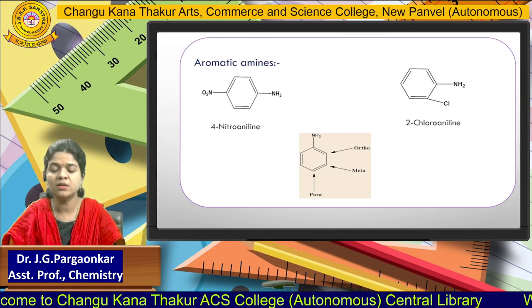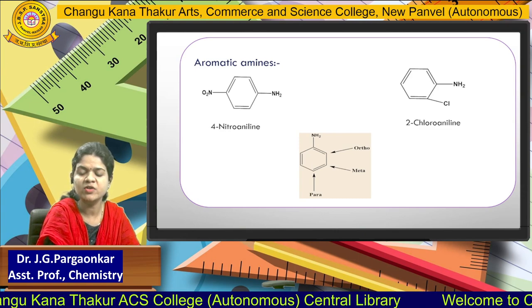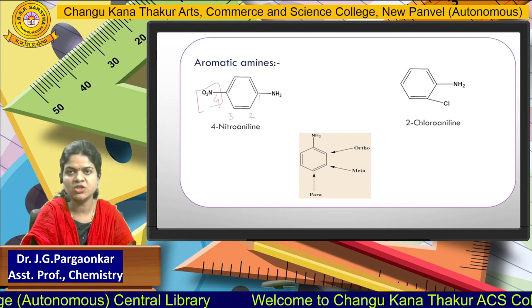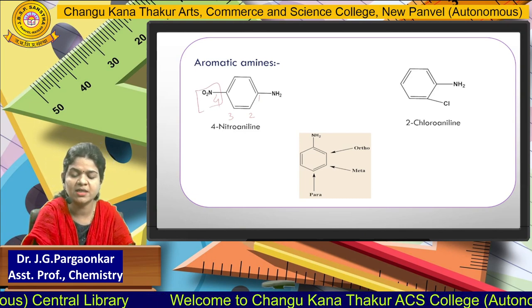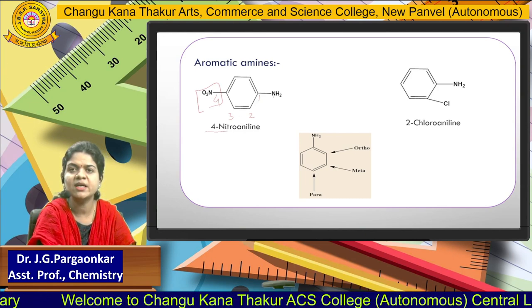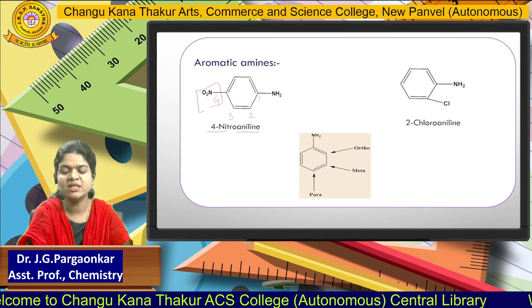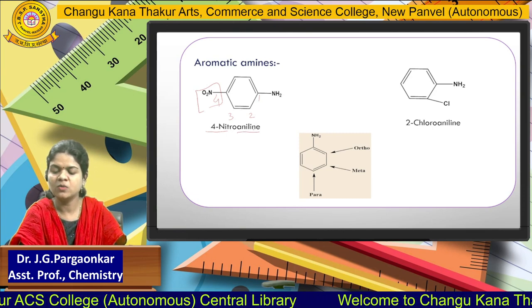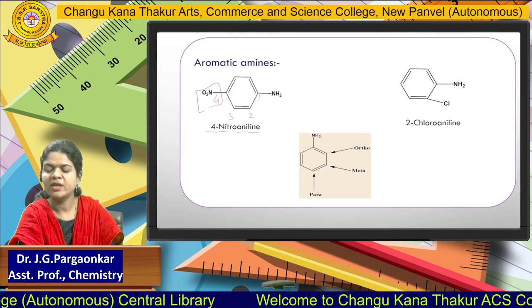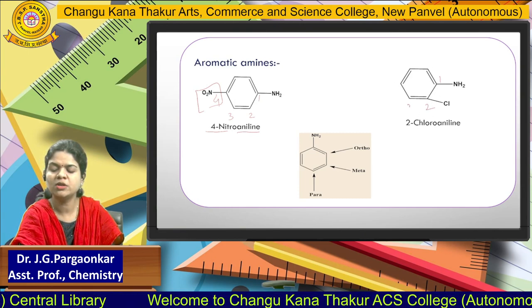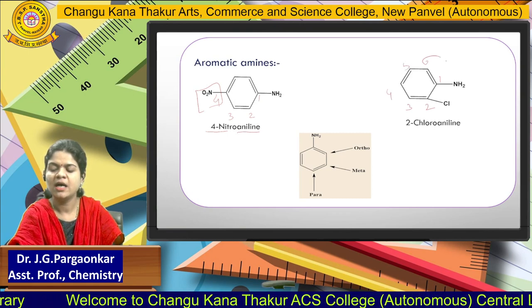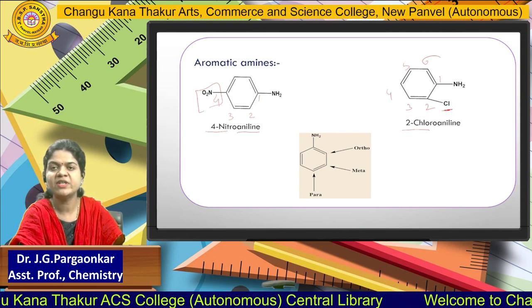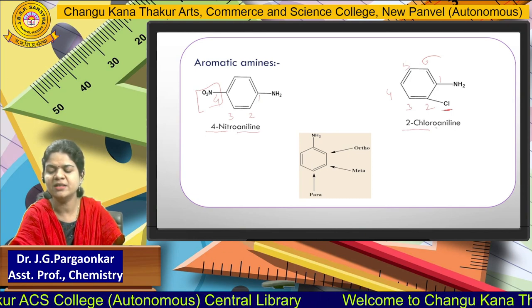For aromatic amines, we give numbers to the ring positions. Numbering one, two, three, four: at position four a nitro group is attached, and since benzene plus NH₂ is aniline, the name is 4-nitroaniline. For the next structure, numbering one through six: a chloro group is at position two, so the name is 2-chloroaniline.